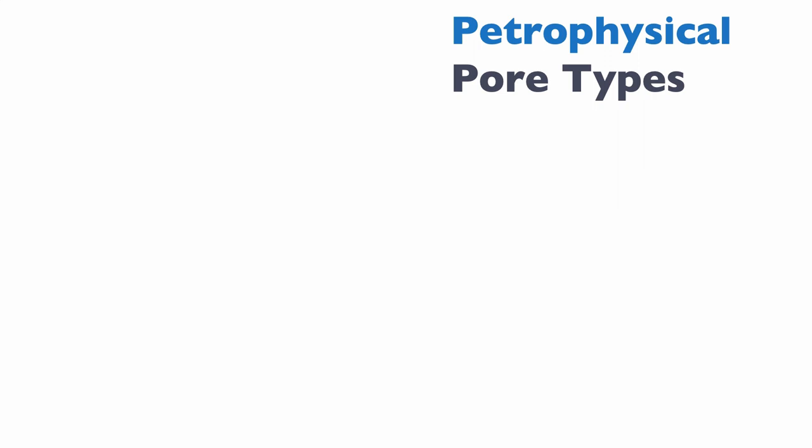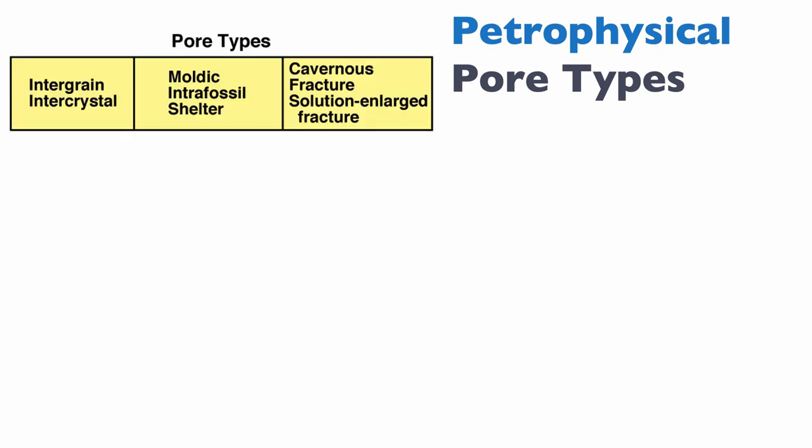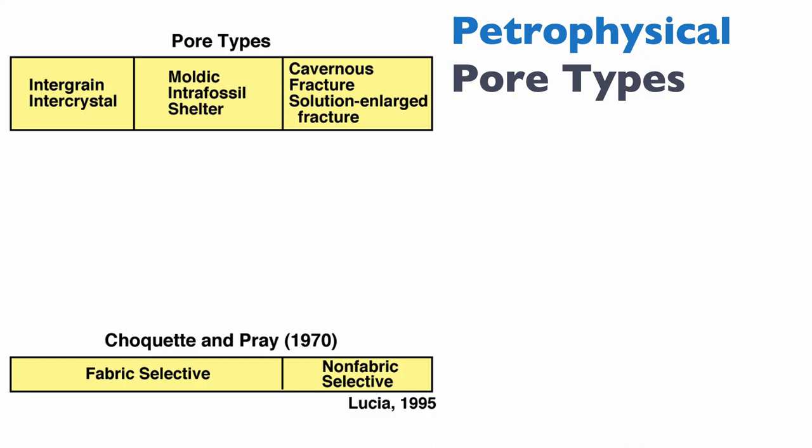Let's look at the pore types we find in petrophysical classification, because this is going to be about petrophysics. In terms of pore types, we can recognize intergrain and intercrystal pore types — those behave similarly in terms of petrophysics. In the middle, we have moldic, intrafossil, or shelter porosity, which are relatively isolated and need to flow through the matrix. Finally, we have very large pores like cavernous fractures and solution-enlarged fractures. We can superimpose on that our Choquette and Pray classification: fabric-selective porosities correspond to the first two categories, whereas non-fabric-selective porosity corresponds to the last category.